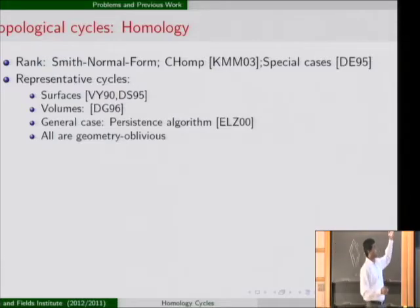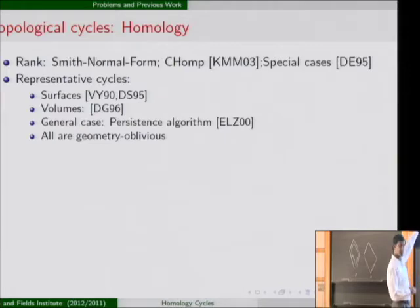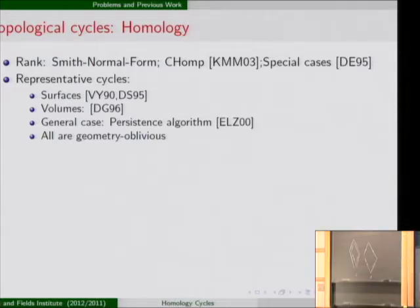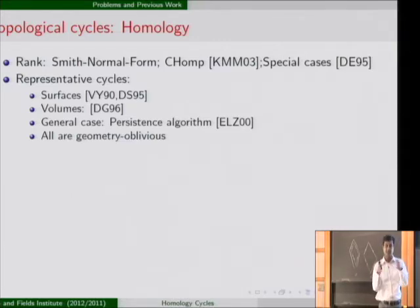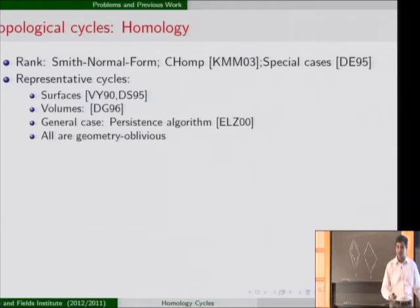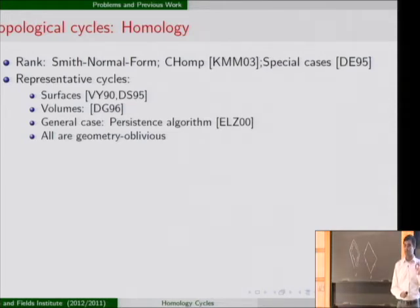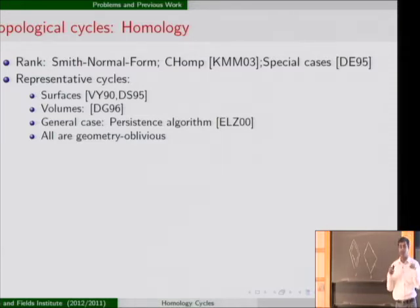Topological cycles are age-old in mathematics. People know how to compute the ranks of homology groups by Smith normal form — this is a well-known algorithm with various variations. People have come up with simplified versions for special cases like surfaces and volumes. Recently, the persistence algorithm can compute ranks of homology groups for arbitrary finite simplicial complexes. But my main goal is not to compute the rank, because that is not enough for feature recognition — we have to really compute the generators.